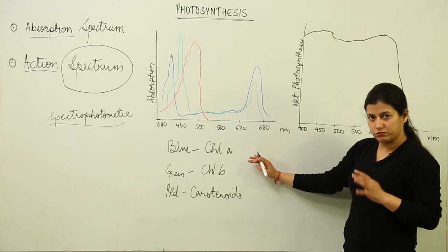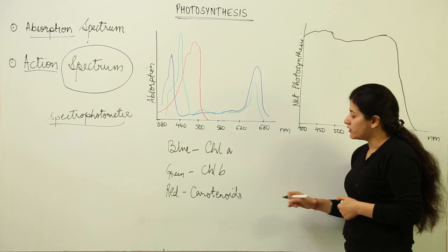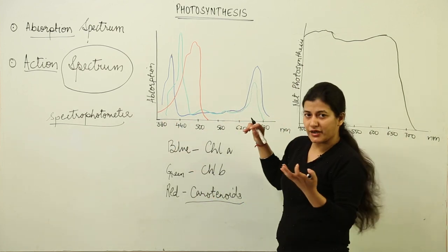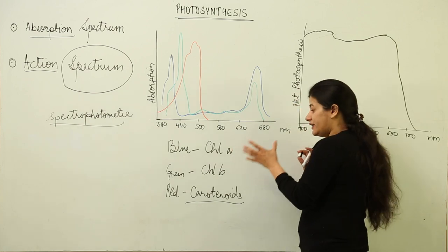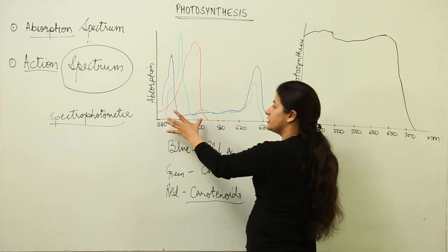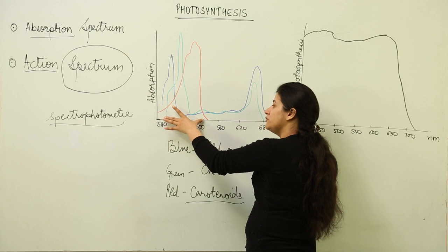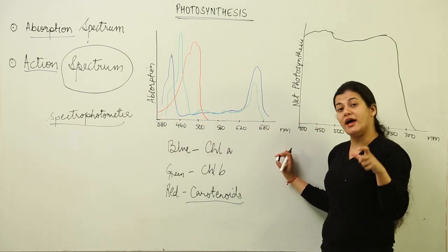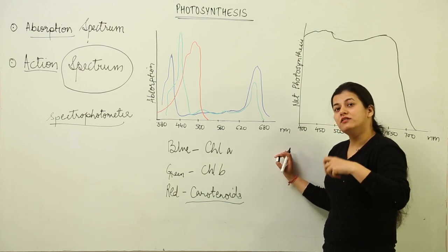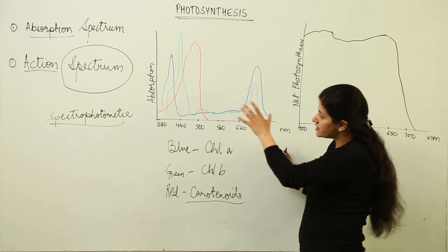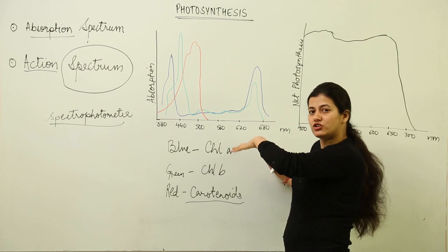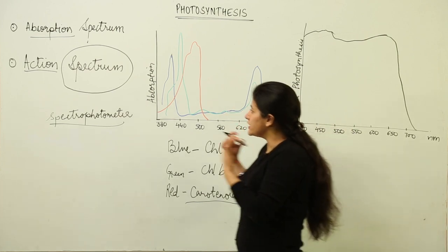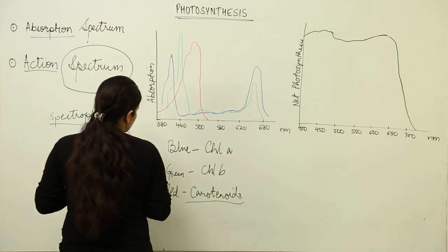Regarding the carotenoids, which are reddish-orange in color, their region of absorption ranges between the violet and blue. Then the absorption stops — they do not absorb in the red region. That is why they reflect red wavelengths and appear reddish in color. This is the absorption spectrum of the three different pigments. Now, what is the relevance of this absorption spectrum that we get?